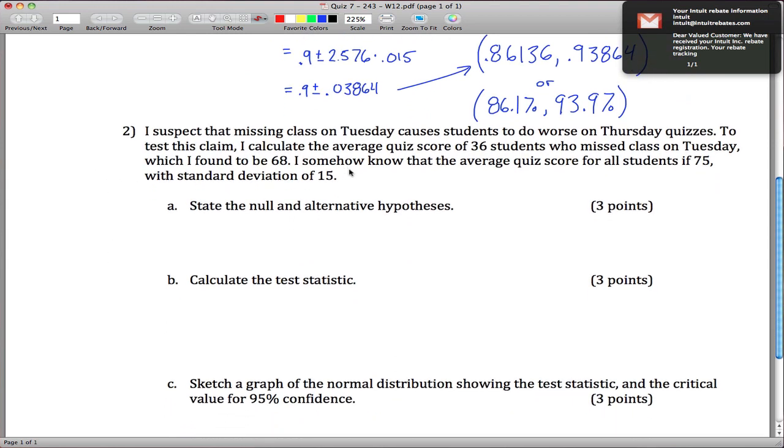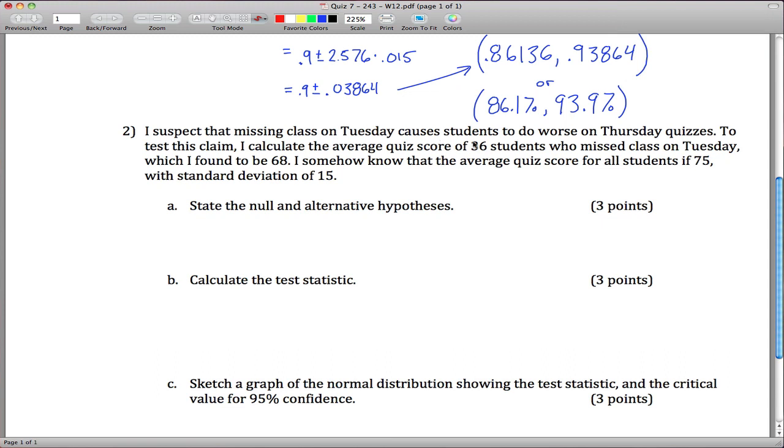Part two: I suspect that missing class on Tuesday causes students to do worse on Thursday quizzes. To test the claim, I calculate the average quiz score for n equals 36 students who missed class on Tuesday.